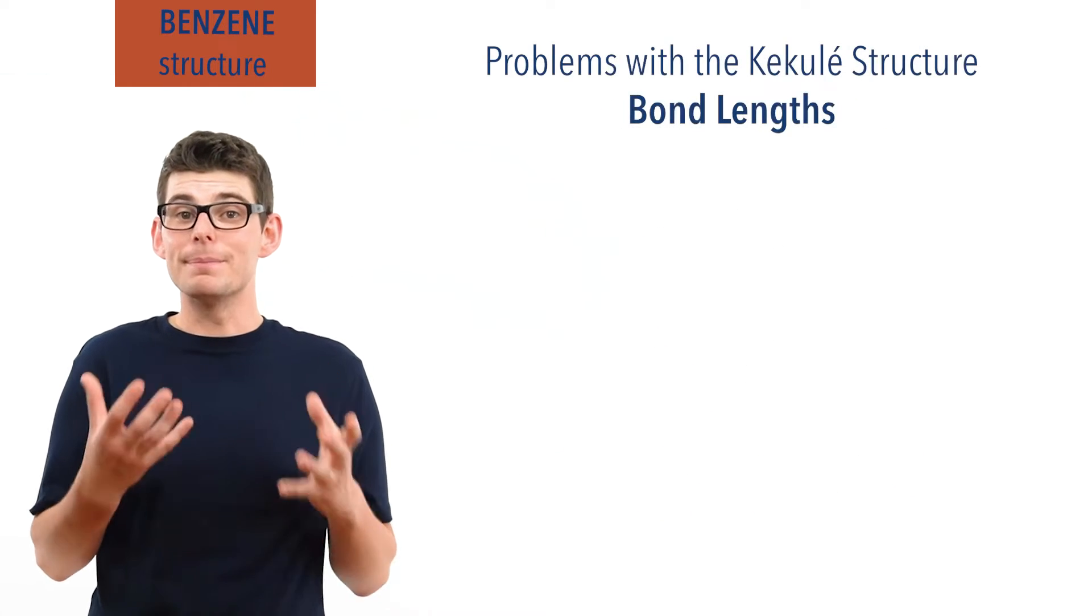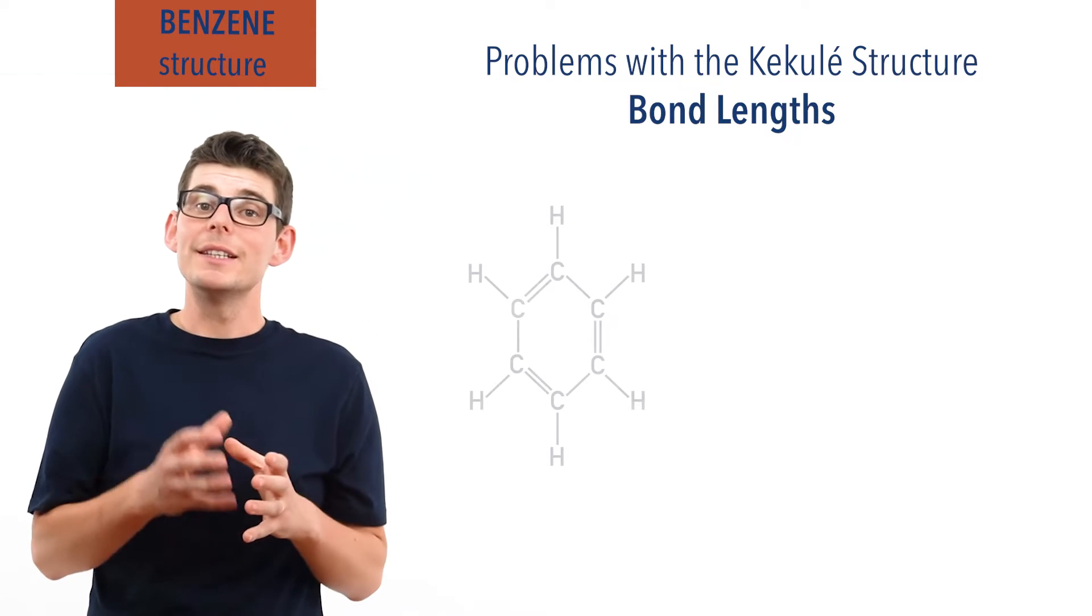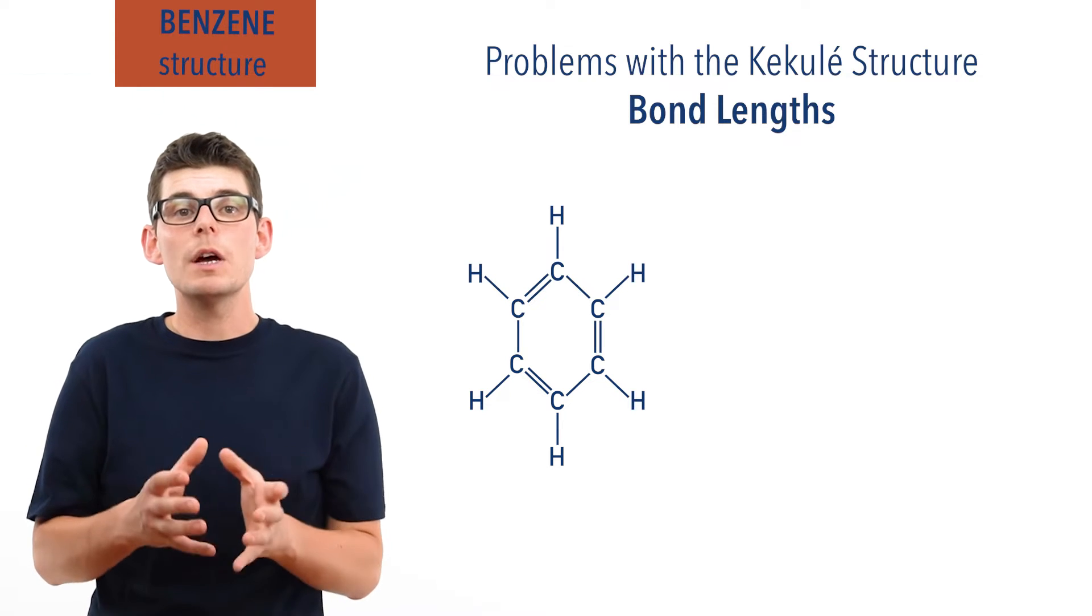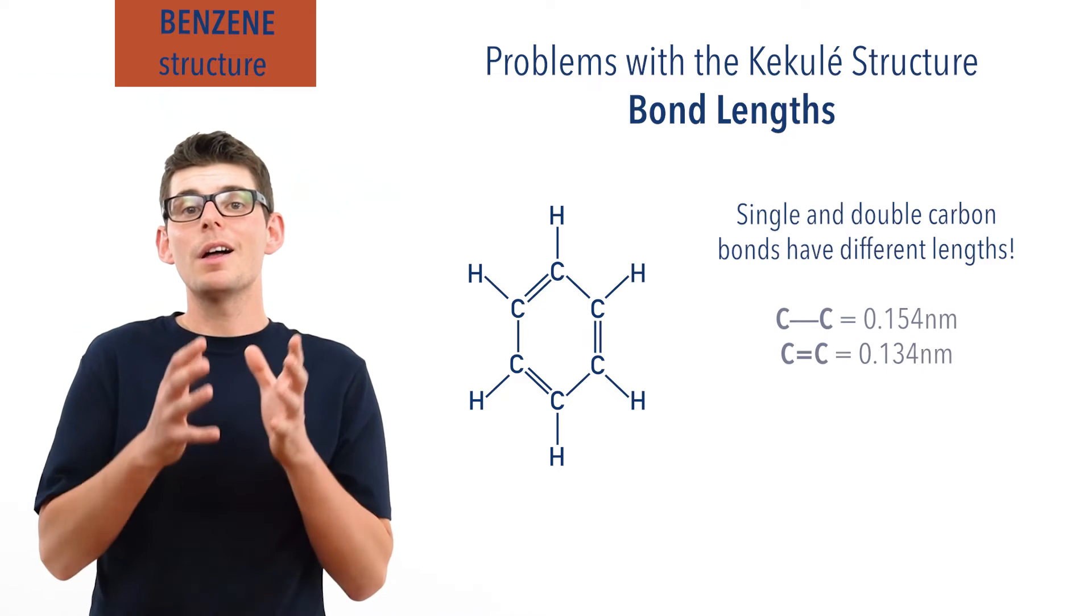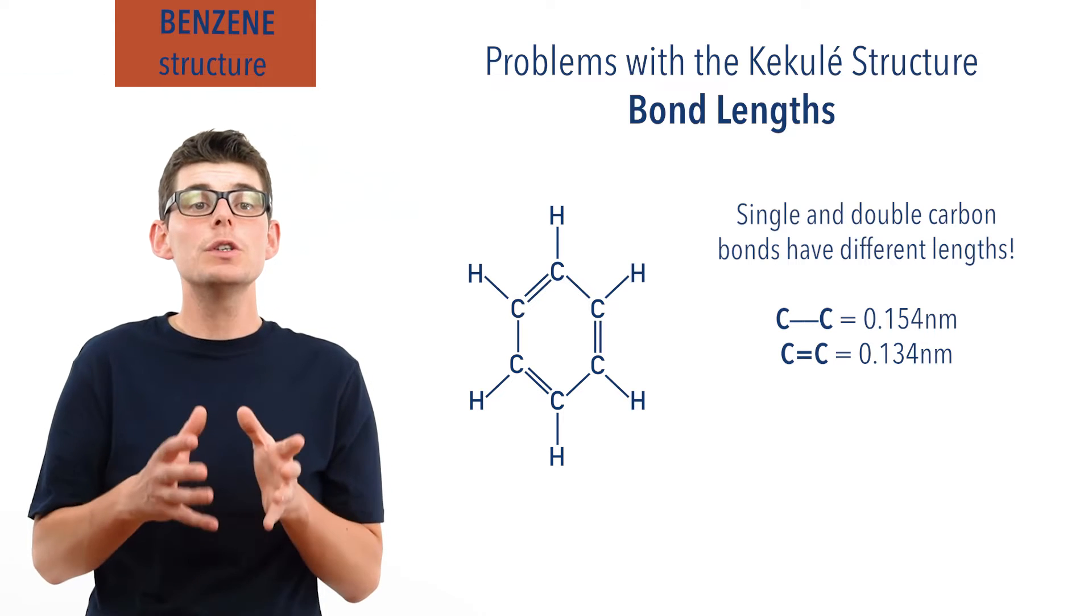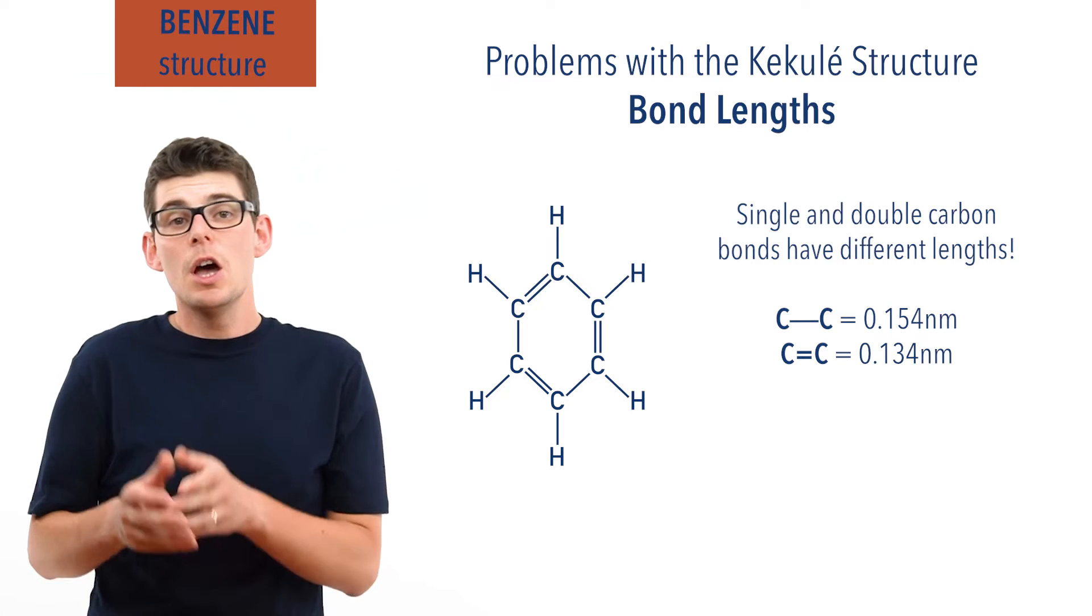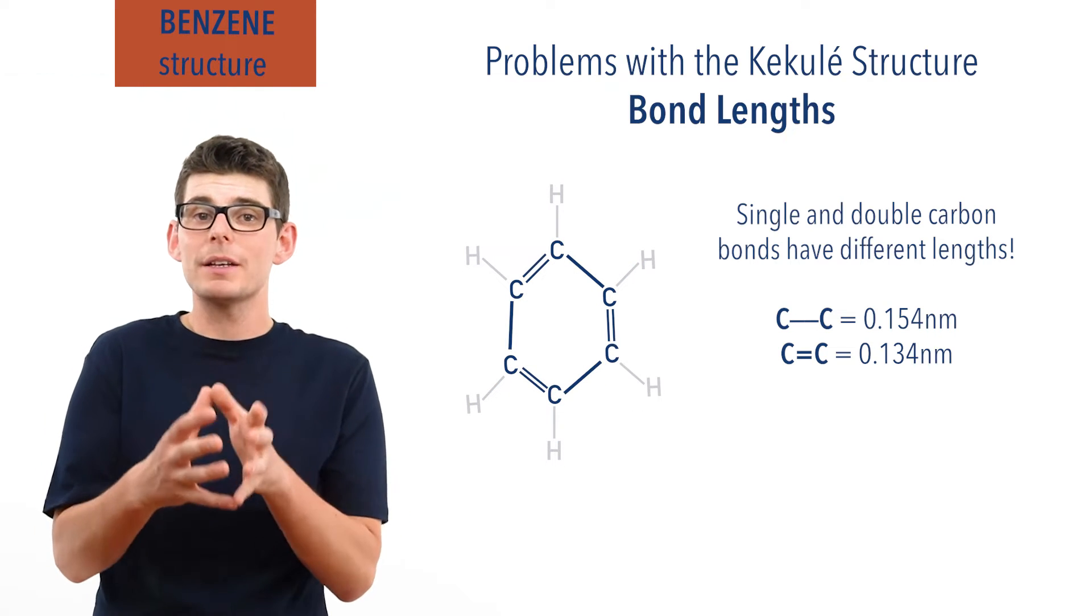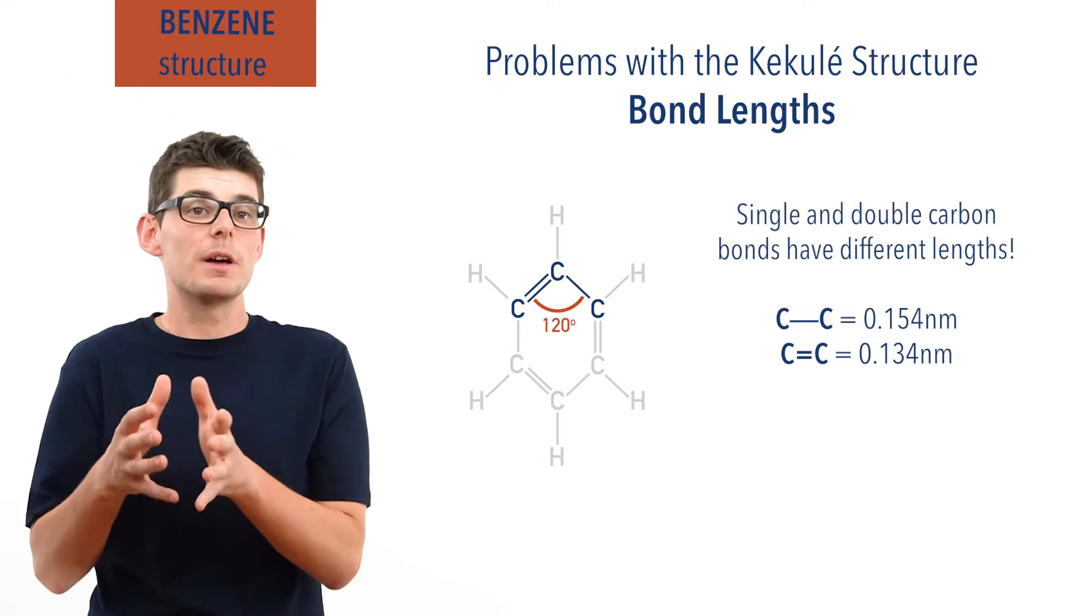The first problem lies in bond lengths. Remember in the Kekulé structure there are alternating single and double carbon bonds. Well single and double carbon bonds have different bond lengths. Single bonds are longer than double carbon bonds. This would mean the ring-like structure of benzene couldn't be a perfect hexagon, as proposed by Kekulé. Unequal bond lengths would skew the shape and bond angles between carbon atoms would also be different, unlike the 120 degrees in a perfect hexagon.